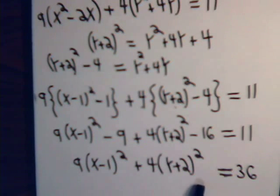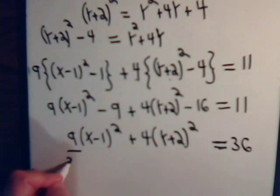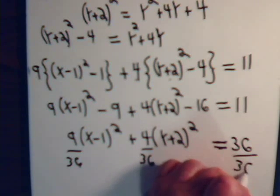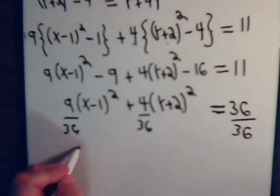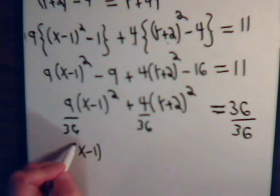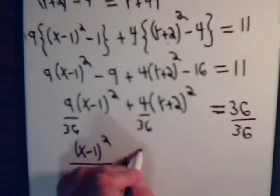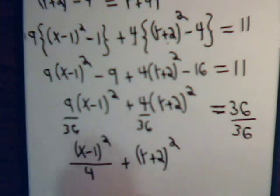Now divide both sides of the equation by 36. And we have x minus 1 squared divided by 4 plus y plus 2 squared divided by 9 equals 1.